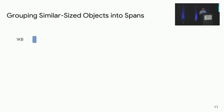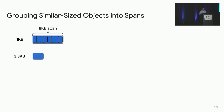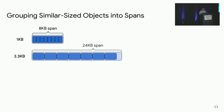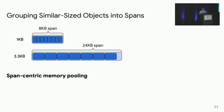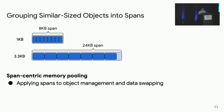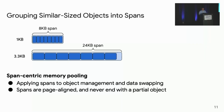For example, for one-kilobyte objects, we pack eight of them into an 8-kilobyte span. For a larger object like 3.3 kilobytes, we pack seven of them into a 24-kilobyte span with small fragmentation. We borrow the configuration from TCmalloc to pack objects into properly-sized spans, minimizing end-of-span fragmentation. We call this approach span-centric memory pooling and apply it to both object management and data swapping between local and far memory.